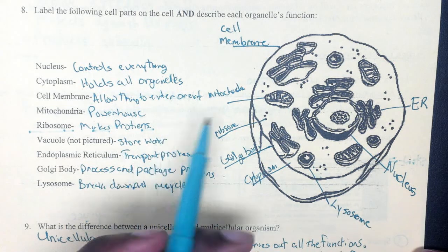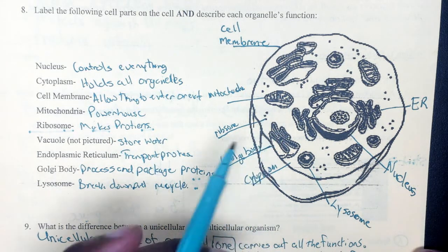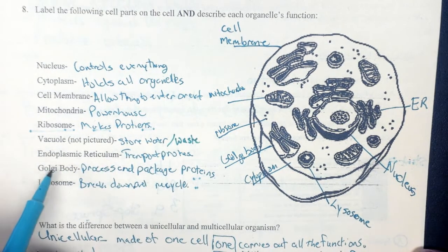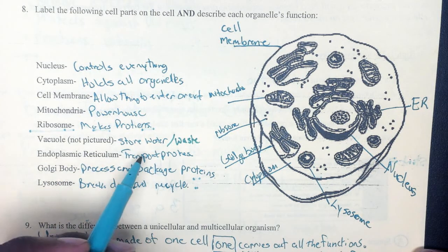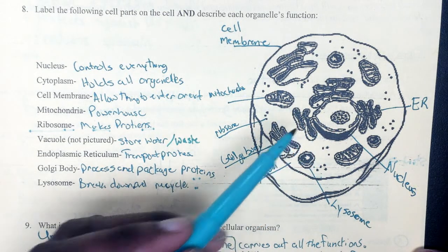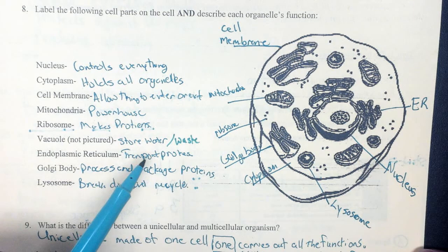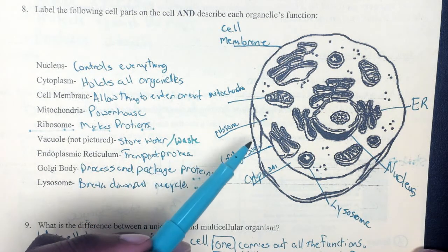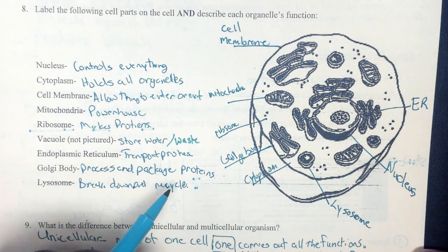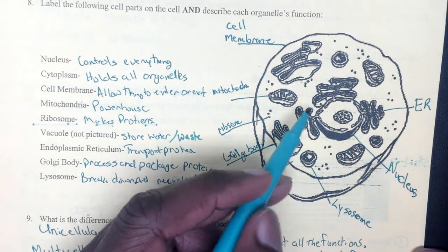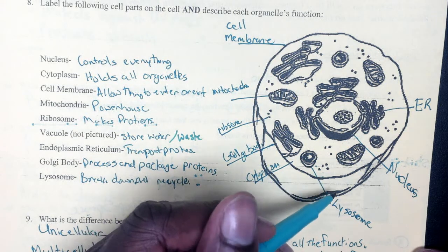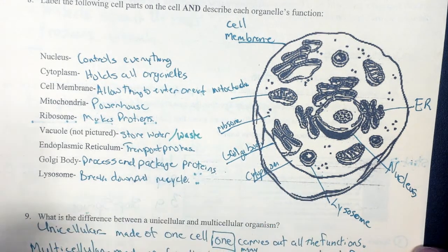The vacuole is not pictured here, but it stores water as well as waste. The endoplasmic reticulum, or ER, transports proteins and is normally found around the nucleus. The Golgi body processes and packages those proteins like UPS and FedEx. The lysosome breaks down and recycles those broken-down particles for future use or expels them from the body — think of lysosomes like Lysol.